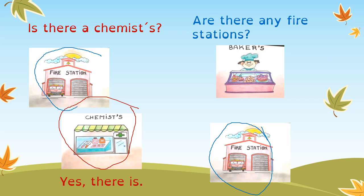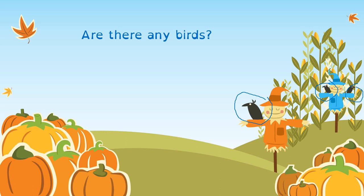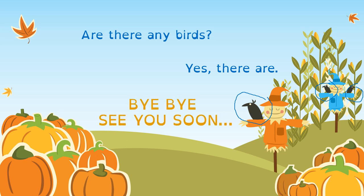One and two, so the answer is 'Yes, there are.' The last one: 'Are there any birds?' Look in the picture — one, two, and three — so the answer is 'Yes, there are.' You can count whatever you want around you. Bye bye, see you soon.